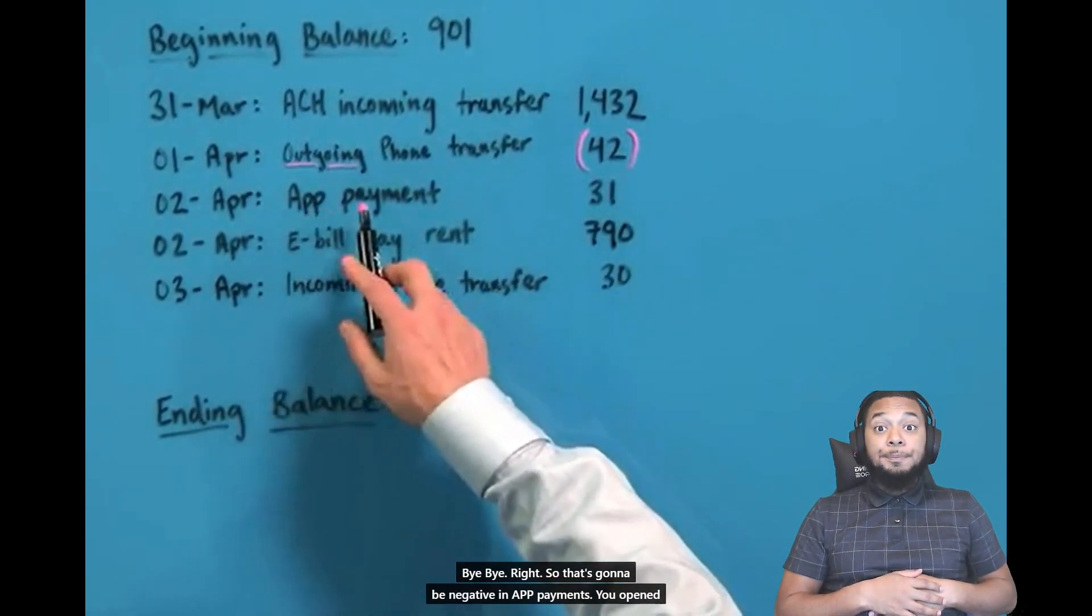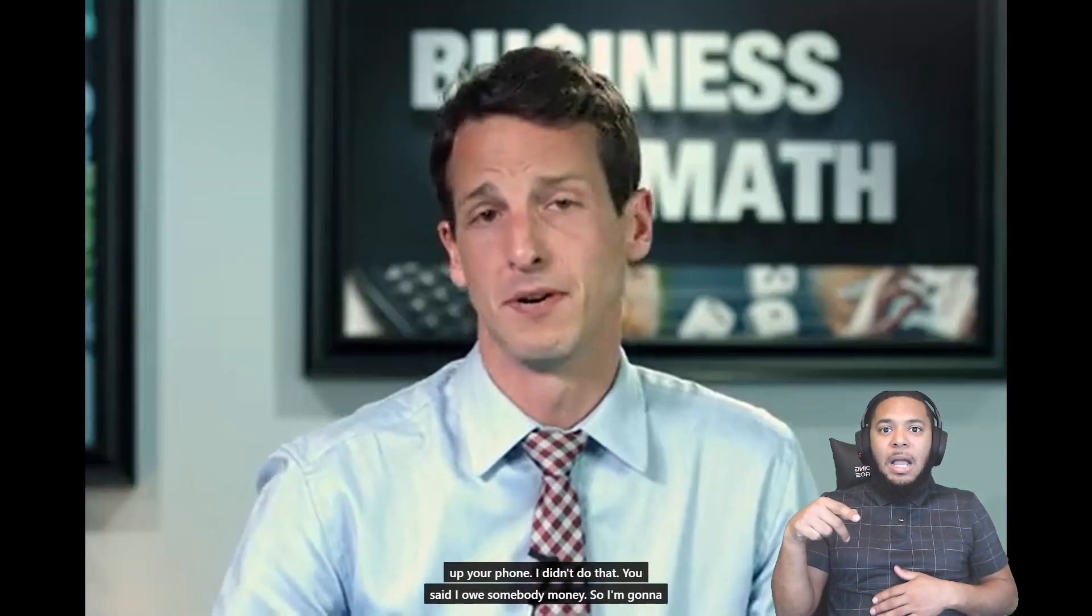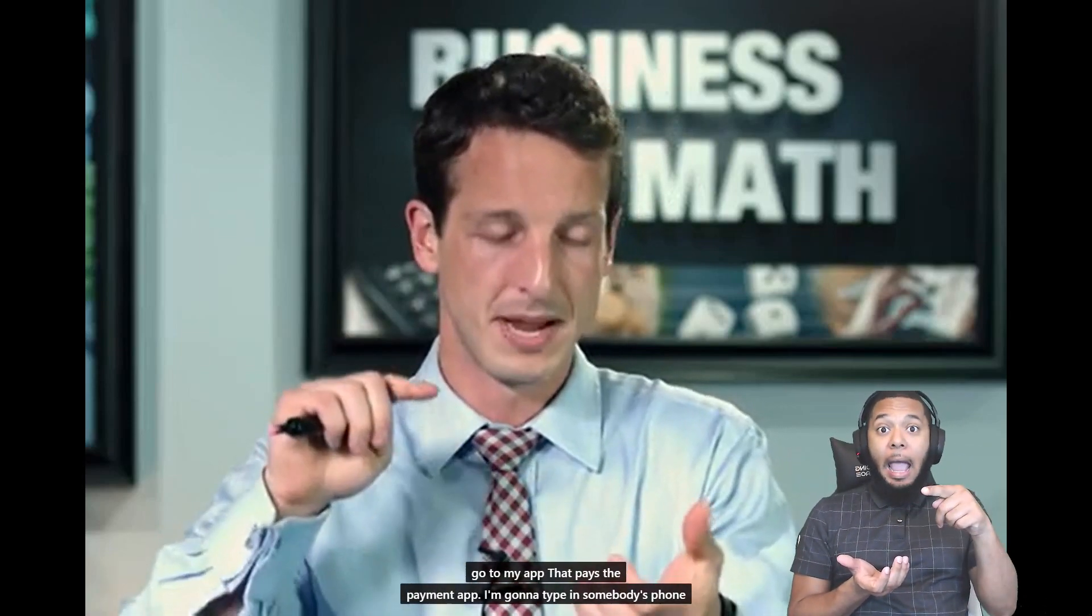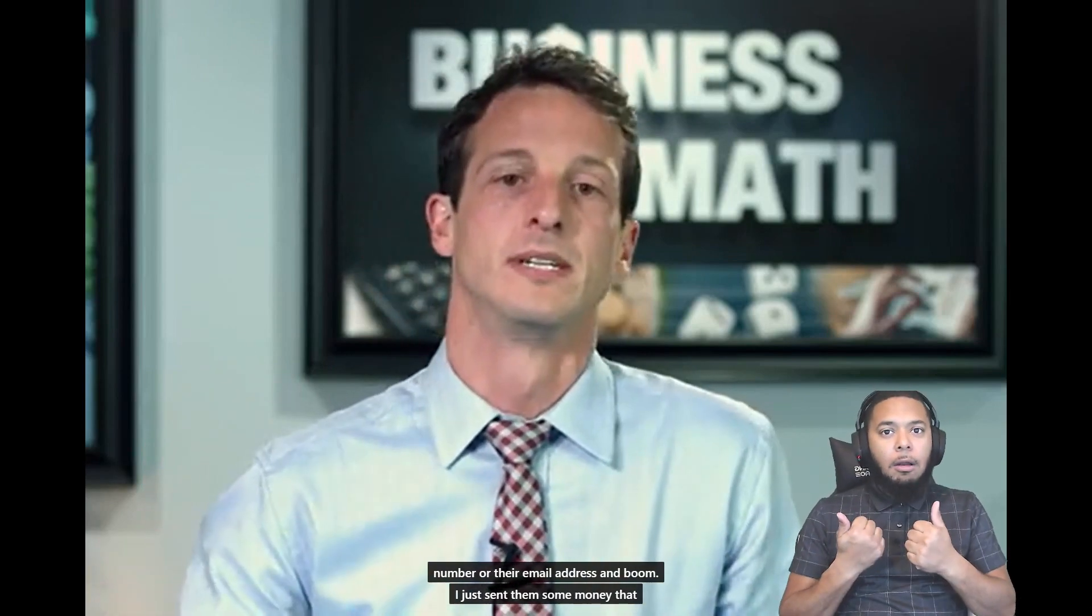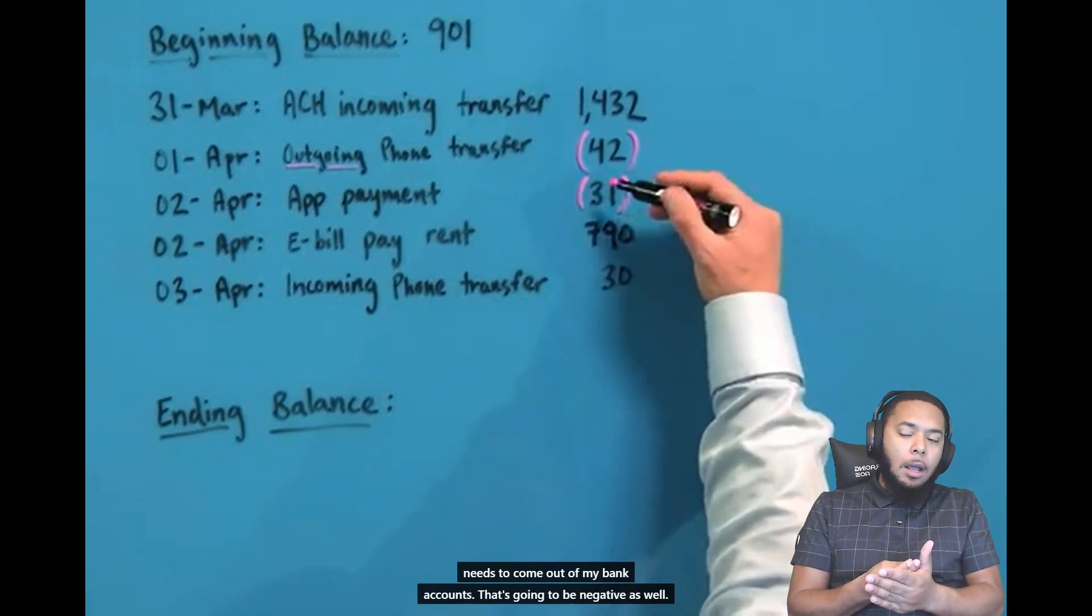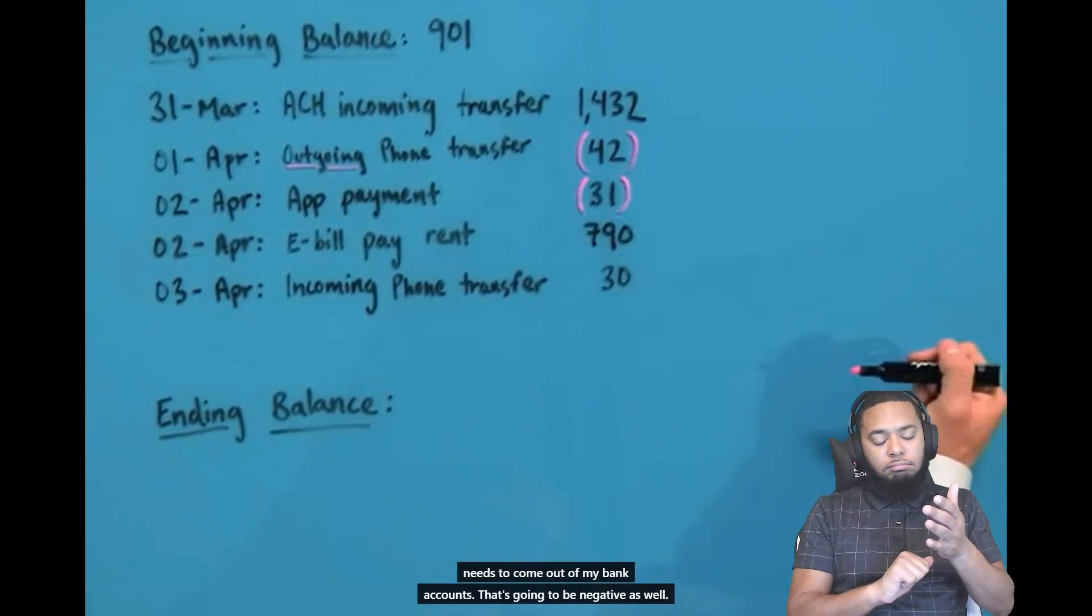An app payment. So you opened up your phone. You said, I owe somebody some money. So I'm going to go to my app that pays, that payment app. And I'm going to type in somebody's phone number or their email address. And boom, I just sent them some money. But that needs to come out of my bank account. So that's going to be negative as well.